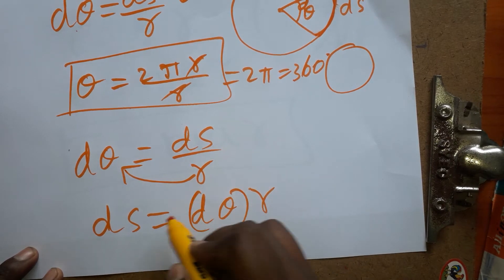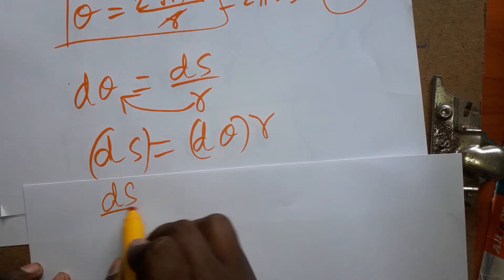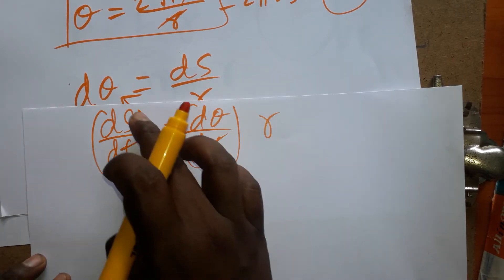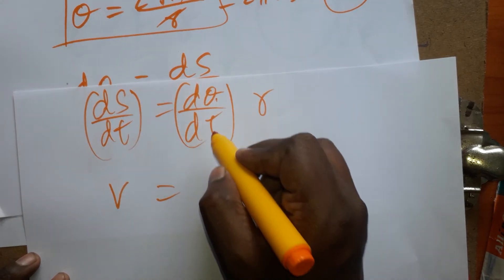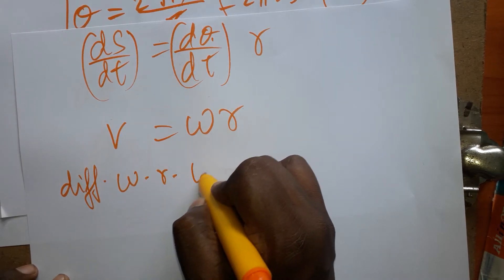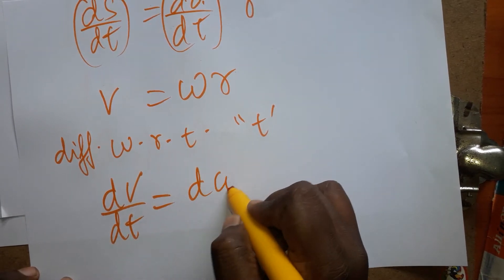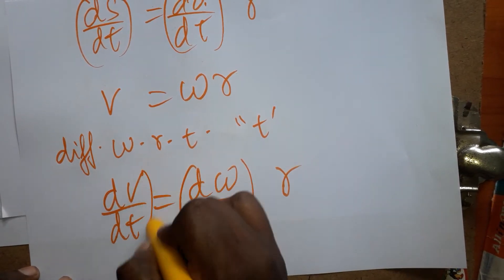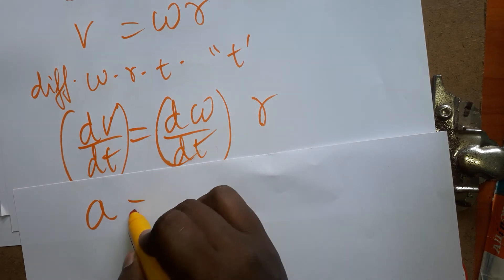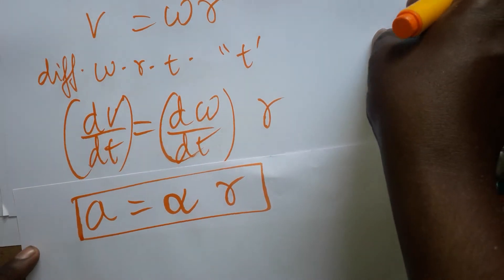Differentiating ds equals r d theta with respect to time gives ds/dt equals d theta/dt times r, which means velocity v equals angular velocity omega times r. Differentiating again with respect to time gives dv/dt equals d omega/dt times r, so acceleration a equals angular acceleration alpha times r.